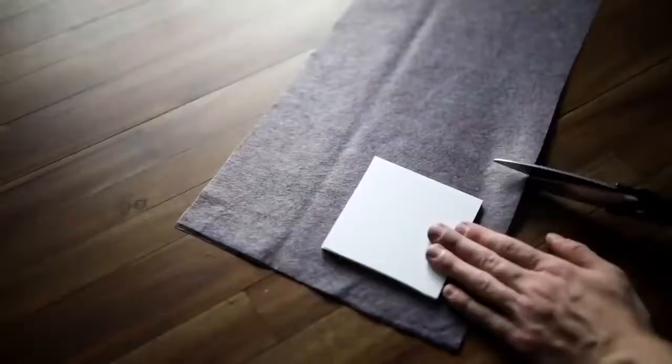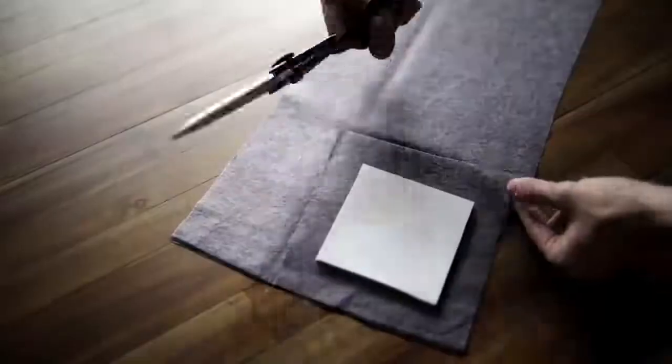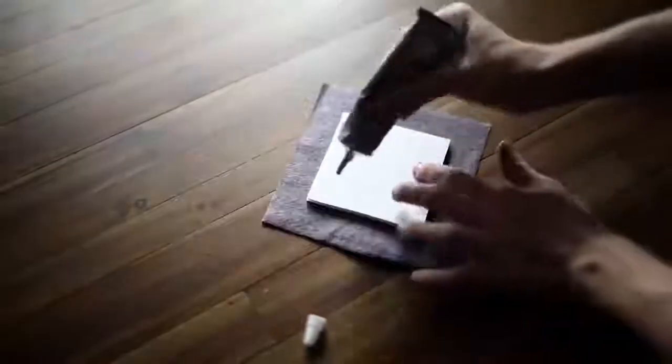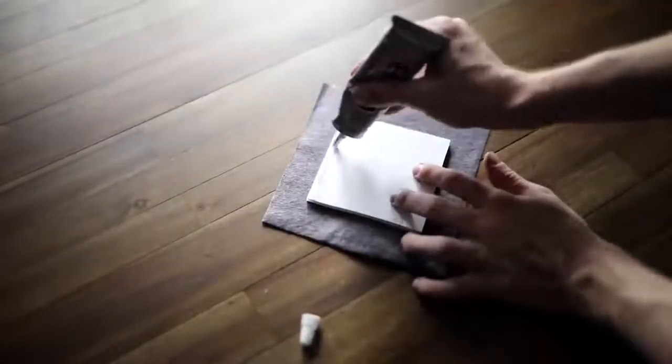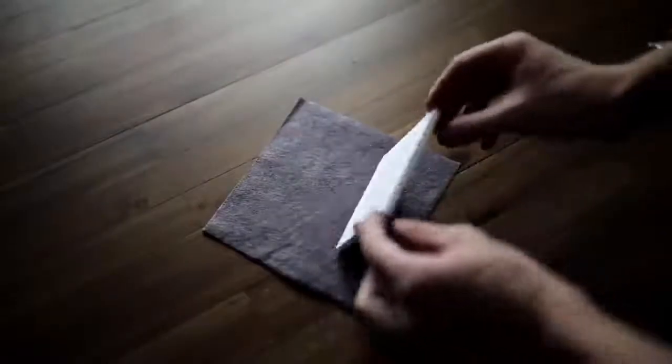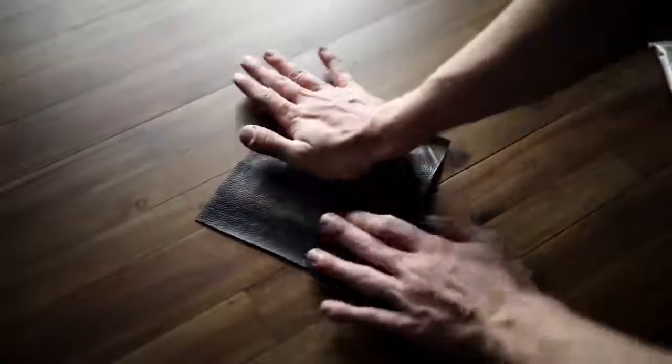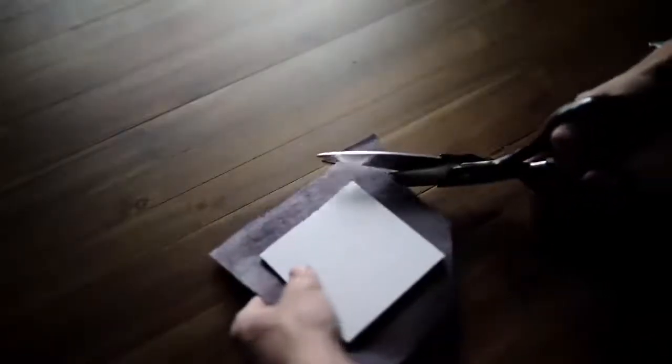You're first going to start off by taking your foam board - this is literally like that project board you use for science projects, and it's a foam based one - and you're going to cut them into four by four inch squares. I just found that this was the nicest size for a coaster. Then I used this pleather fabric I found at Joann's on sale for a dollar for a quarter yard of it, and I just cut out with about an inch around each edge. I did it very roughly.